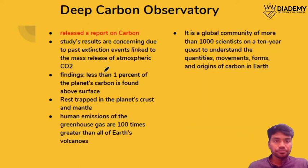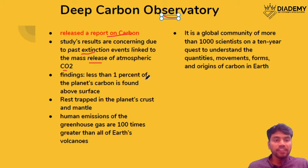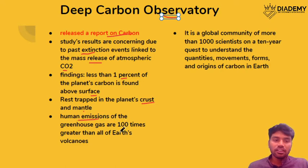The next topic is the Deep Carbon Observatory. It released a report on carbon, with findings concerning past extinction events linked to mass releases of CO2. It is found that less than 1% of the planet's carbon is found above the surface; the rest is in the crust and mantle. Human anthropogenic activities have led to greenhouse gas emissions that are 100 times greater than emissions released by all Earth's volcanoes.